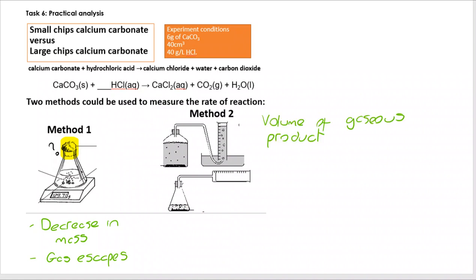On method two, we are measuring the volume of gaseous product. And it could be done in two ways. It could be how long does it take to collect x cm cubed, how long to get 10 cm cubed of gas, how long to get 50 cm cubed of gas. But you could alternatively say how much gas is produced in y seconds. So I'm going to measure the volume every 10 seconds or every 30 seconds.